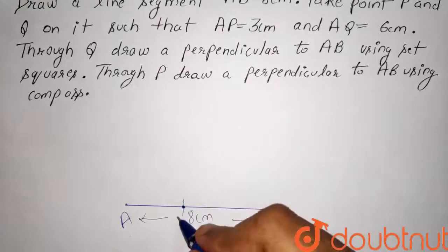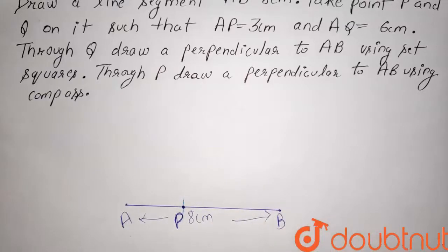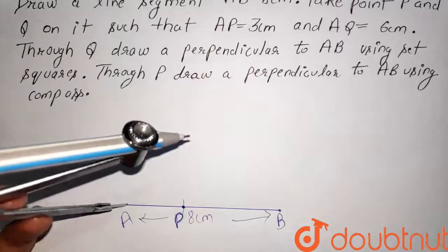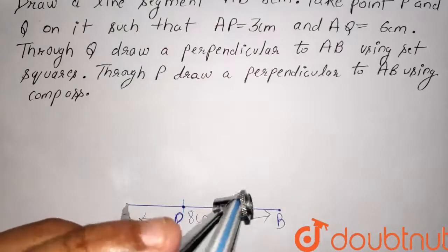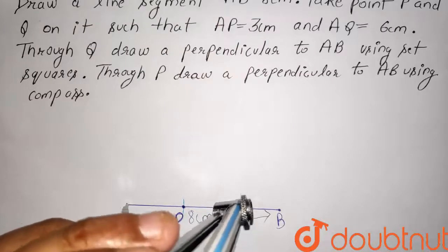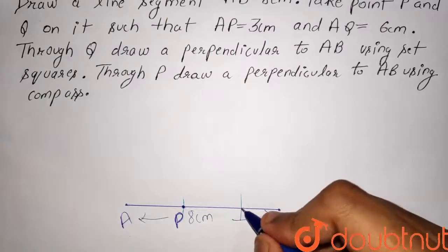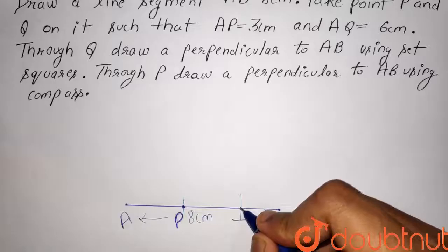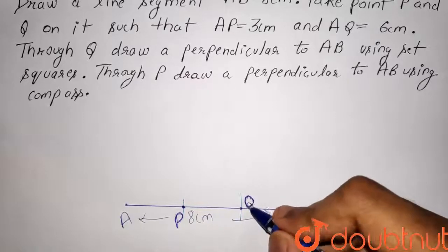This point is P. Now we have to also take a point Q such that AQ is equal to 6 cm. So, taking the measurement of the compass as 6 cm, we will cut an arc of 6 cm on this line.